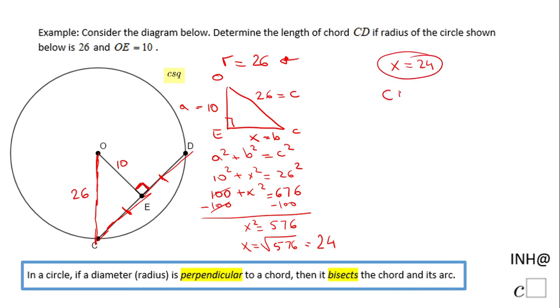This x of 24 is the segment CE in our case. CD, that chord, is twice the length of CE because CE and ED are congruent (OE bisects segment CD). So CD = 2 × 24, which equals 48.